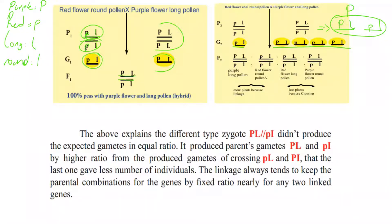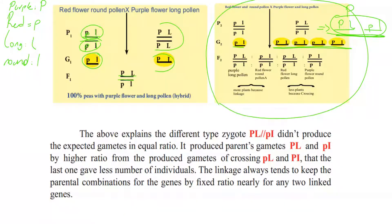In the second case, the hybrid normally can produce only two kinds of gamete: PL or pl. But if crossing over happens, four types of gametes can be formed — like in Mendel. If crossing over does not happen, only two kinds of gametes form. But if crossing over happens, we write the gametes as in Mendel. Then by fertilization between male and female, organisms form. But notice: more plants result from linkage (parental types), and fewer plants result from crossing over (recombinants). So the number of recombinant organisms is less, while normal parental organisms are more.